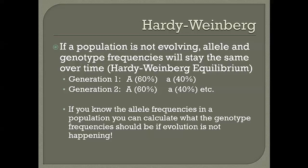For example, in generation one of an organism with two alleles — big A and little a — if 60% of the alleles are big A and 40% are little a, the next generation would also be 60-40. That would stay the same over time. That population would be in Hardy-Weinberg equilibrium — it is not evolving.